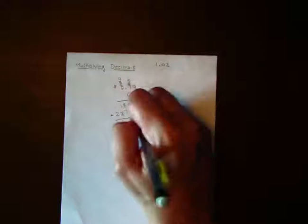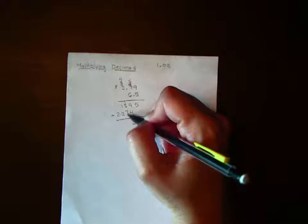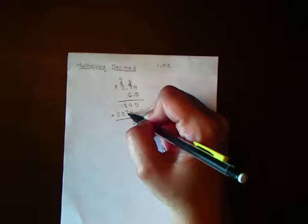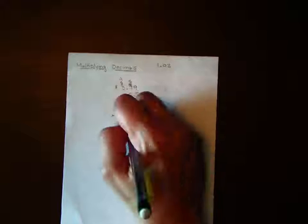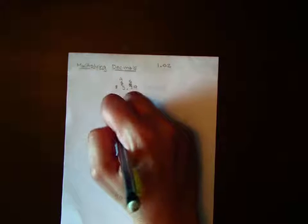5 plus nothing is 5. 9 plus 4 is 13. 7 plus 8 is 15, and 1 is 16. 1 and 1 is 2, plus 2 is 4, and nothing plus 2 is 2.